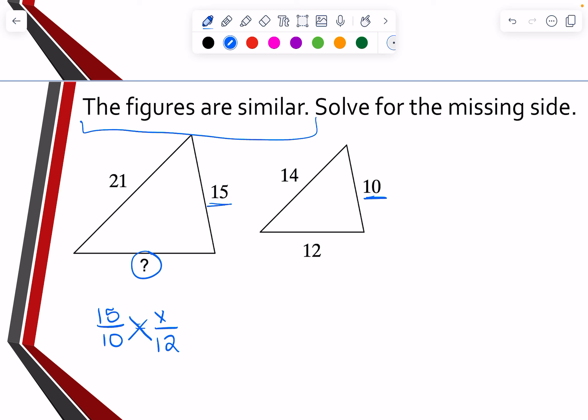So then what we can do is we can cross multiply this. So when I cross multiply, I end up getting 10X equals 180. I would divide by 10. And I end up getting X to be 18.